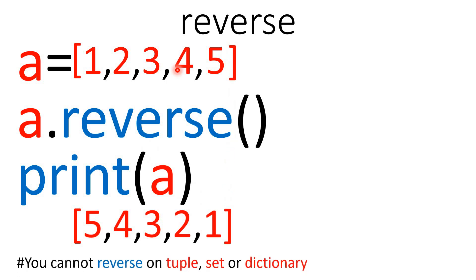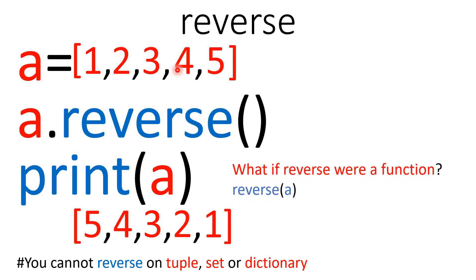However, you cannot use the reverse method on tuples, sets or dictionaries. If reverse were a function, you would type it like: reverse and then in parentheses the name of the object — reverse(a). But in Python, reverse is a method and not a function, so you must use it with dot notation.